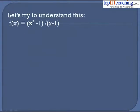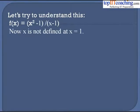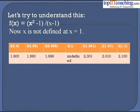Consider the function f(x) = (x² − 1) / (x − 1). This function is not defined at x = 1; putting x = 1 gives an indeterminate form. Let's take values of x very close to 1. For x = 0.9, f(x) = 1.900. For x = 0.99, f(x) = 1.990. For x = 0.999, f(x) = 1.999. At x = 1 itself, the function is undefined.